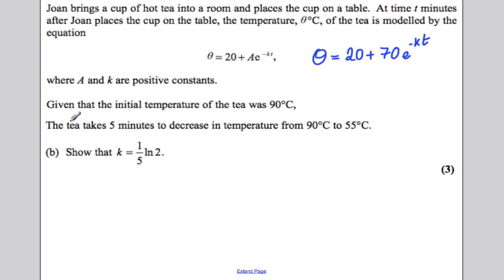Now, it says the tea takes five minutes to decrease in temperature from 90 degrees to 55. Show that K is equal to this. So, when t is equal to 5, we know that theta is now equal to 55.